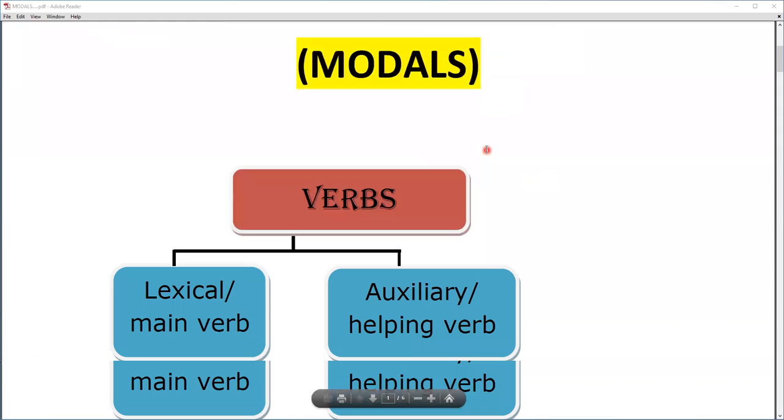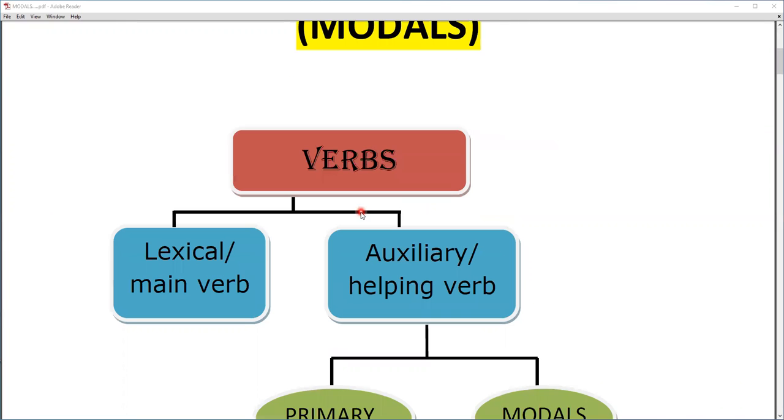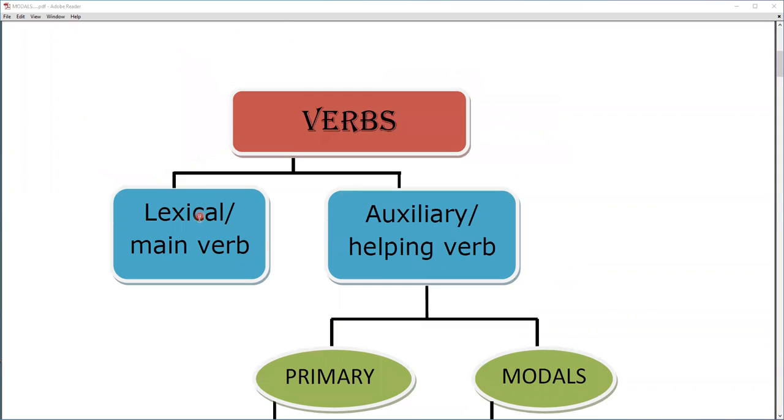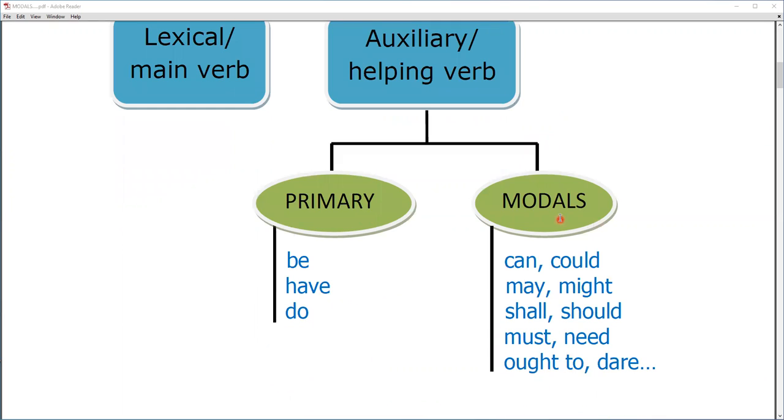Before starting modals, I would like to explain about verbs because modals are the part of verbs. There are two main kinds of verbs: lexical verb, which we call main verb, and second is auxiliary, which we call helping verb. Helping verb has two parts, primary and modals.